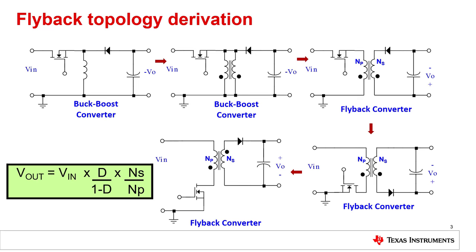Let's do the first step and exchange the inductor with a shorted transformer. We still have a buck-boost converter. In the next step, we disconnect the primary winding from the secondary winding, which transforms the topology to a flyback converter.